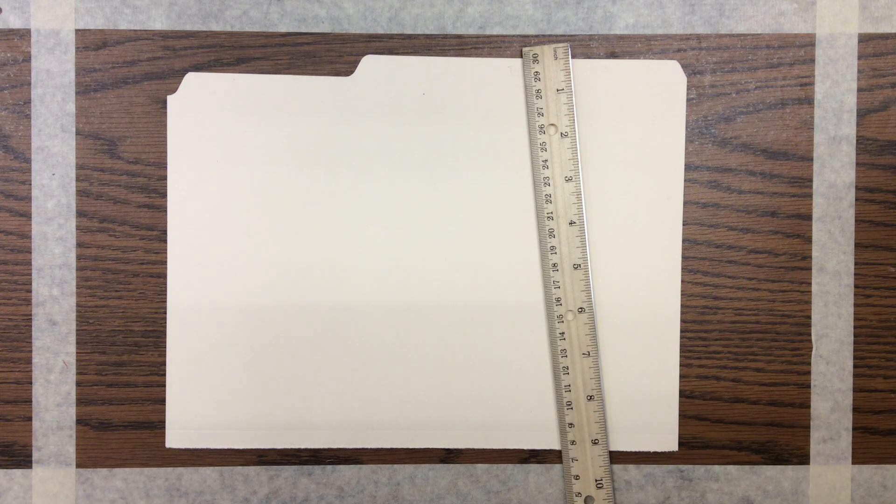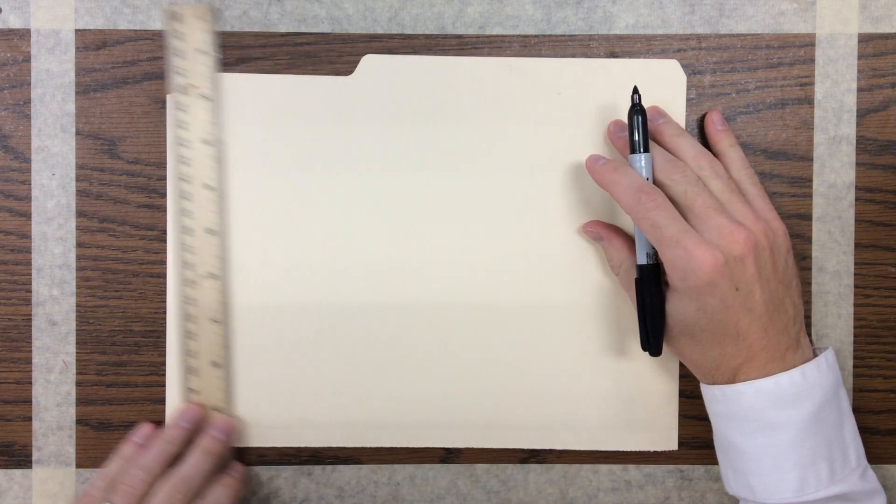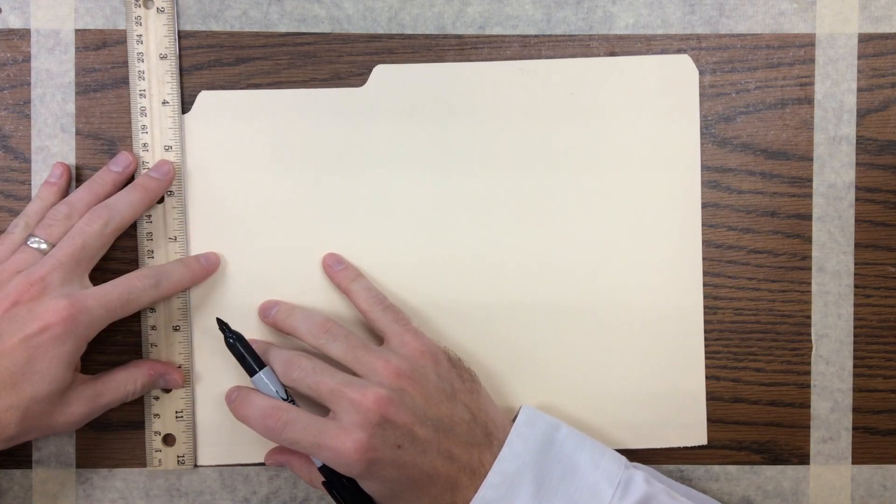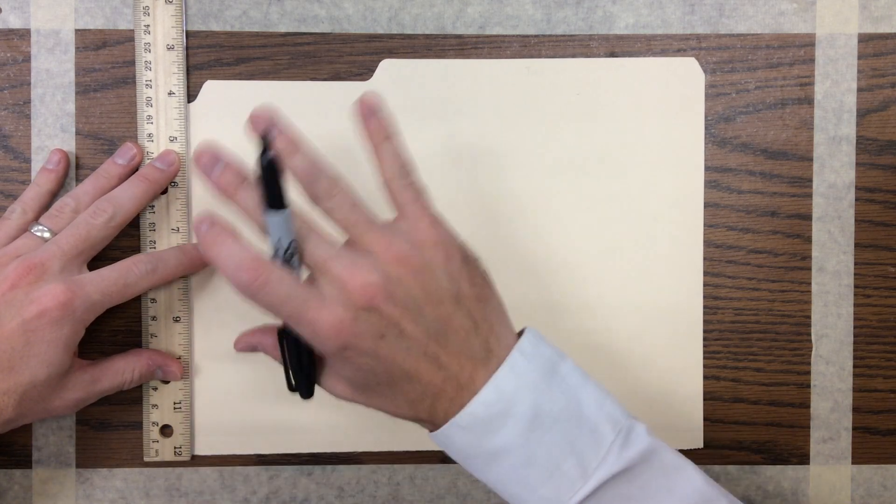Today we're going to be making the Project Lead the Way skimmer. Remember it's very important that we have not only straight lines but also parallel lines. When working with the skimmer, I always reference the bottom because I know this is straight and I can use that to work my way up.